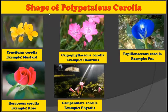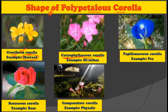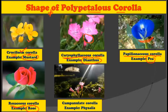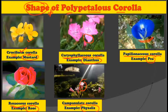Now let us look at the different shapes found in a polypetalous corolla. The cruciform type of corolla is found in mustard. The caryophyllaceous corolla is found in Dianthus and has a very unique structure. The papilionaceous corolla is present in pea. The rosaceous corolla is found in rose, with petals arranged one after another in a round form. Then there is the campanulate corolla found in Phycellus.